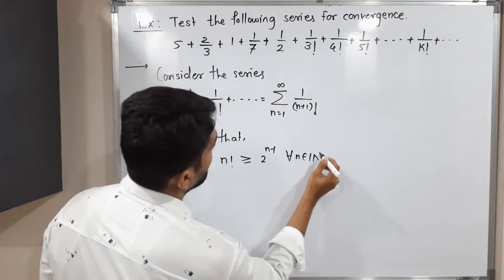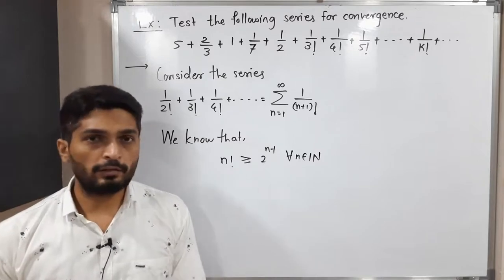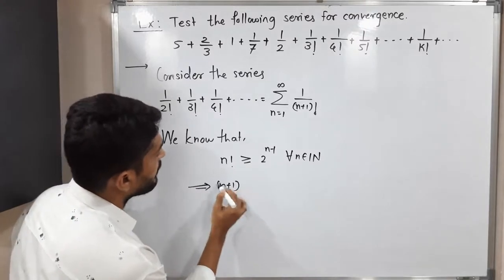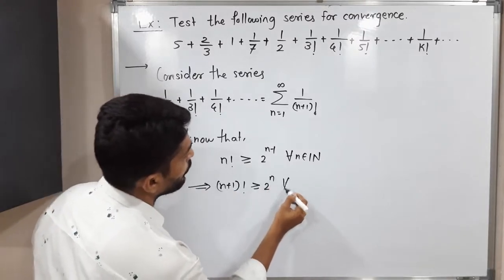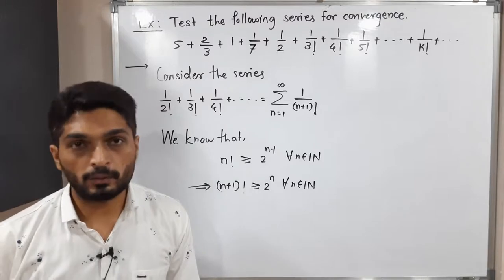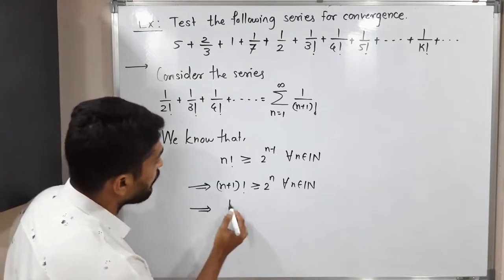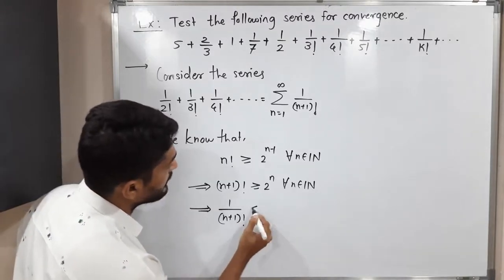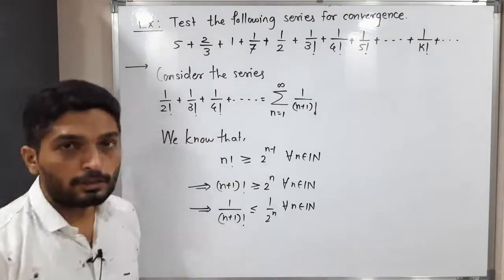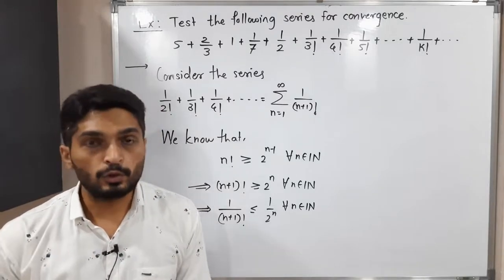We will make a small modification: (n+1) factorial is greater than or equal to 2 raised to n, for all n belonging to the set of natural numbers. Taking the reciprocal of both sides, the inequality changes, so we have 1 upon (n+1) factorial less than or equal to 1 upon 2 raised to n, again true for all n in the natural numbers.